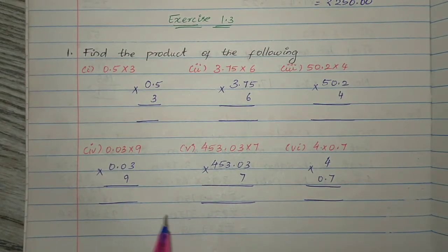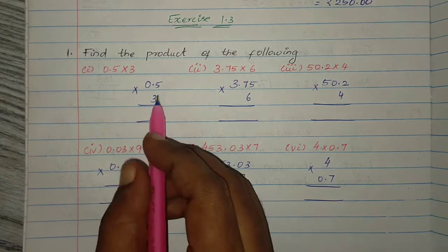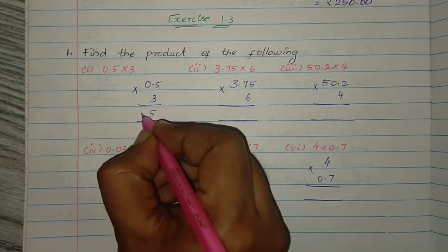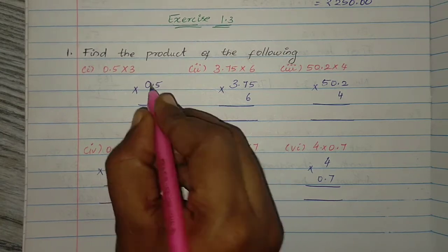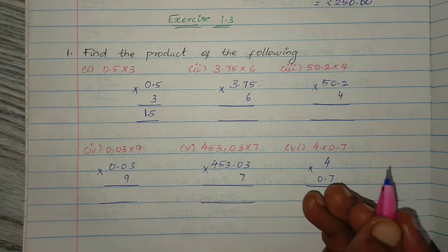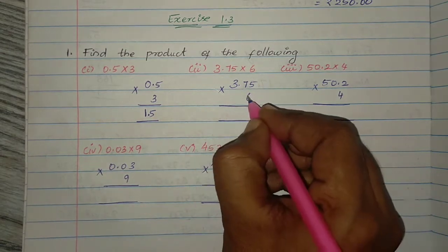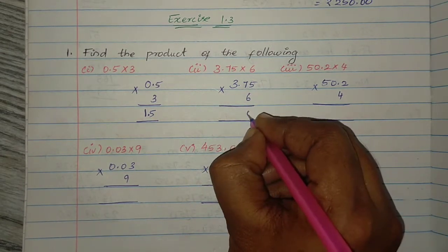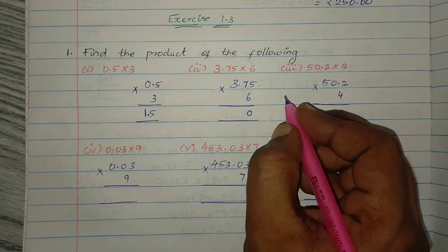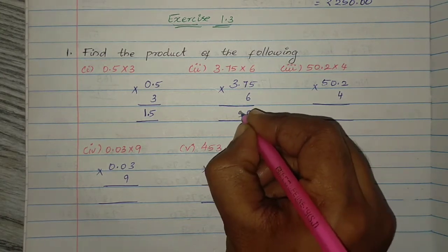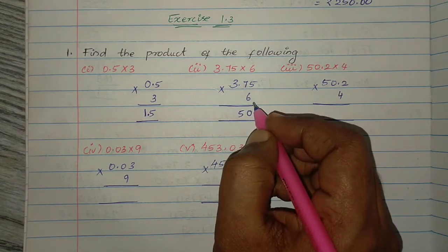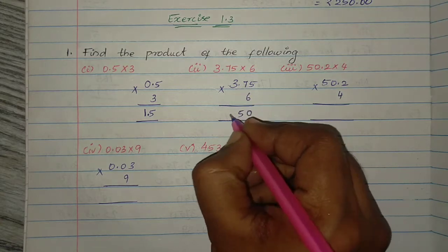Find the product of the following: 0.5 into 3. So multiply — 3 fives are 15, 3 zeros are 0. So 15. Decimal point: one digit over, so place decimal point one digit before. Then 6 fives are 30, 3 in mind, 7 sixes are 42 plus 3 = 45, 4; 6 threes are 18 plus 4 = 22.